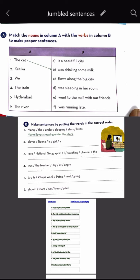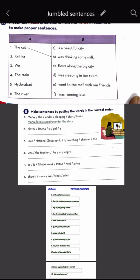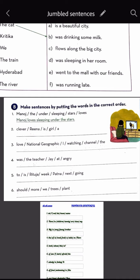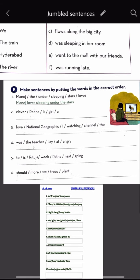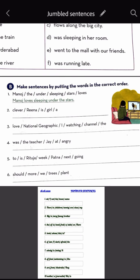Fifth, Hyderabad. It's a city. Here is M, A part. Hyderabad is a beautiful city. The river - next, B part. Make sentences by putting the words in the correct order. So our first: Manoj, the, under, sleeping, stars, loves. These are all scrambled words and we have to unscramble. Manoj loves sleeping under the stars.